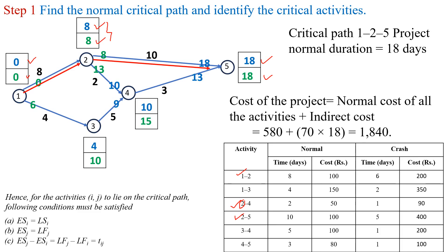Next we calculate the cost of the project. The total normal cost of all activities is 100 plus 100 plus 150 plus 50 plus 100 plus 80, which is 580 rupees. The indirect cost is 70 rupees per day and the duration is 18 days, so the indirect cost is 70 into 18, giving the total project cost.